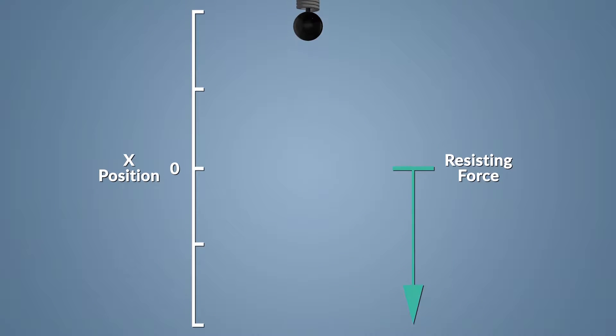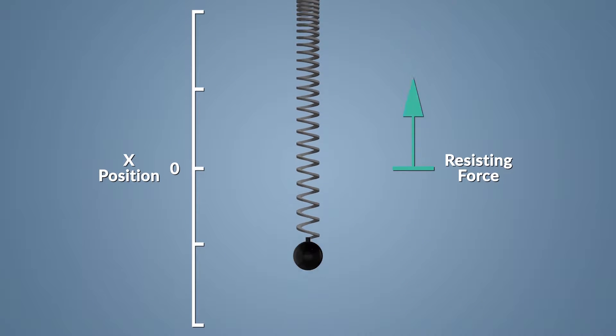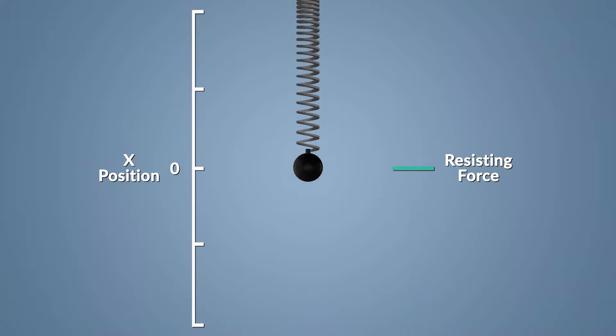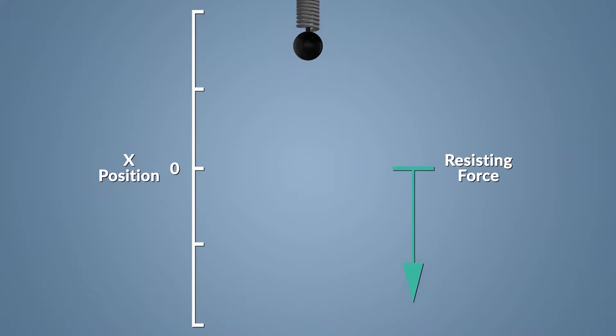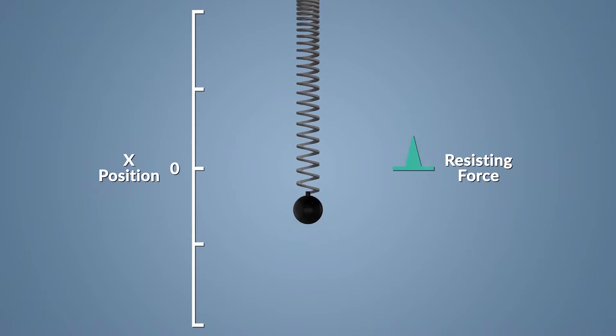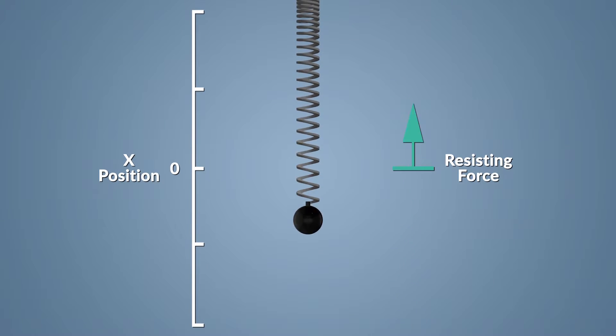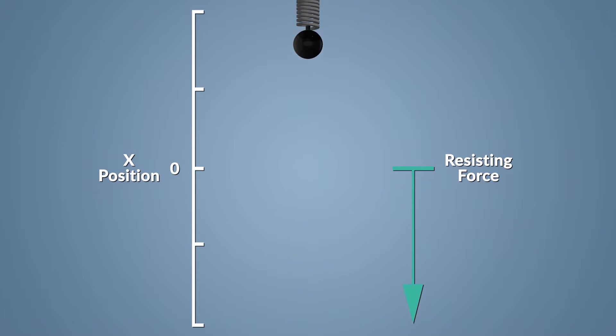Here's how to figure out the energy in a spring that oscillates and has a wave-like motion. You should know the spring constant, which describes how stiff or strong the spring is.